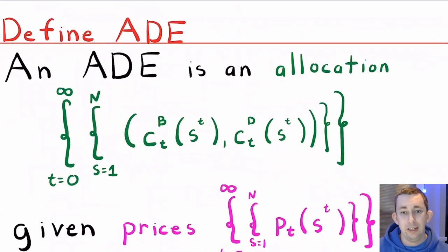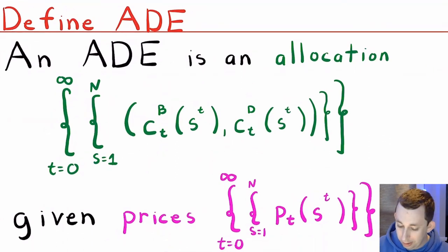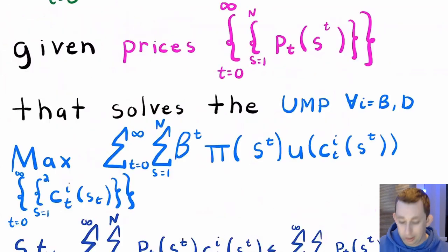For the final part of this video, let's just define an Arrow-Debreu equilibrium for this economy for an infinite period problem. So an Arrow-Debreu equilibrium is just an allocation. Notice now that the allocation is for every state, but also for every time period from T equals zero to infinity. Same thing with prices. Every state of the world, one to N, in our case it's one to two. T equals zero to infinity for every time period.